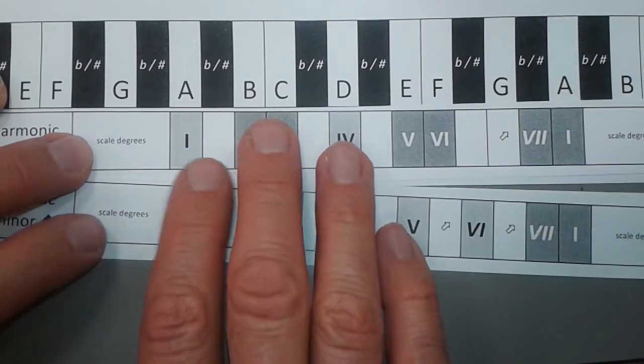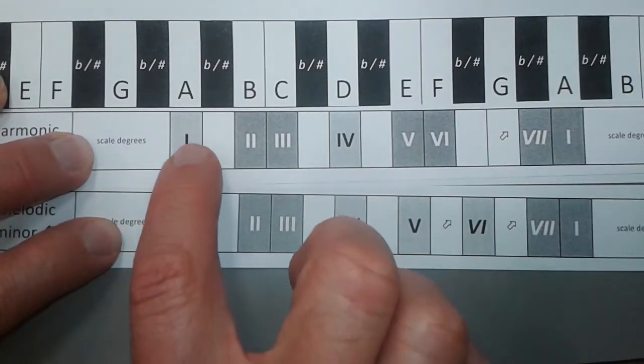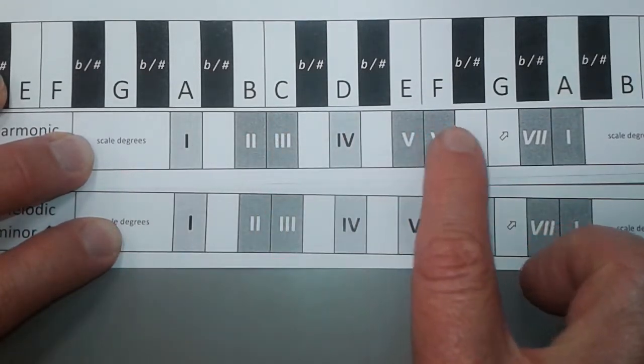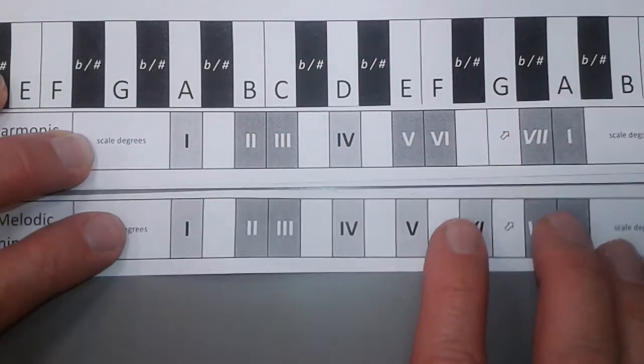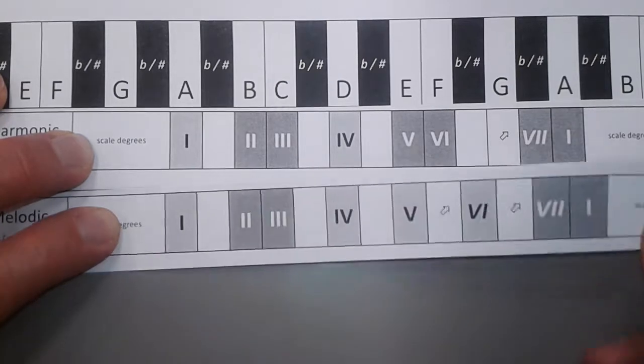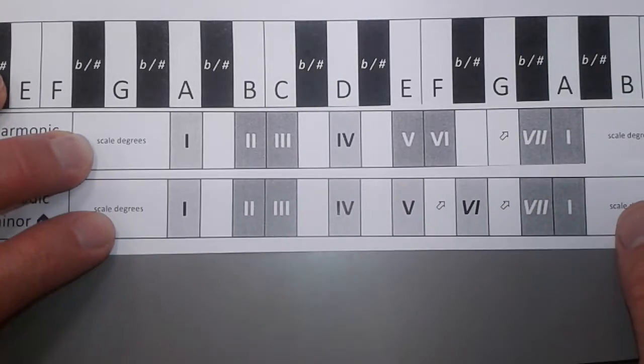Let's look at this. Harmonic minor: A, B, C, D, E, F, G sharp, A, even though G is in the key signature. So we write the G sharp in as an accidental.